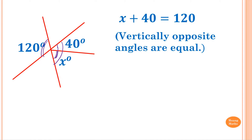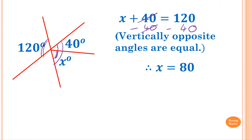Now to find X, we get rid of the 40 by subtracting 40 from both sides. So 120 minus 40 is 80. Therefore X is equal to 80.